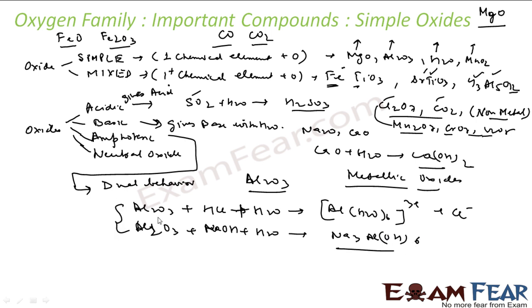The next is neutral oxide. Neutral oxides are neither acid nor base. They are neutral. For example, carbon monoxide, nitrous oxide, N2O - these are neutral oxides. So oxides we can classify as simple and mixed, or we can also classify oxides as acidic, basic, amphoteric, and neutral oxide.